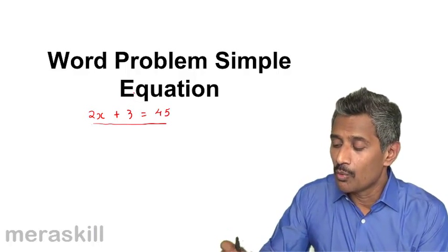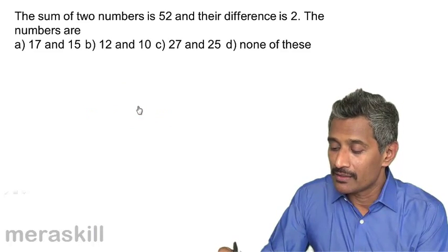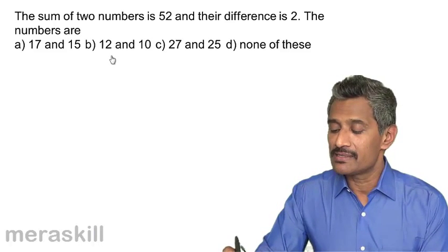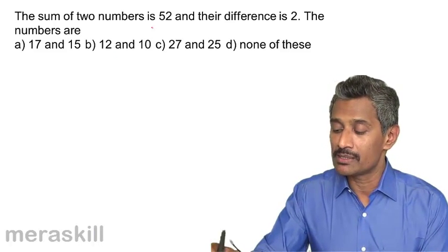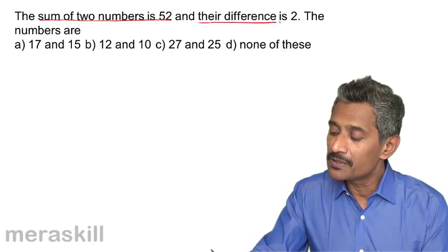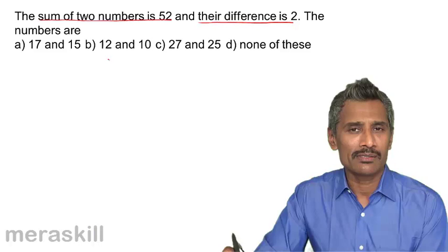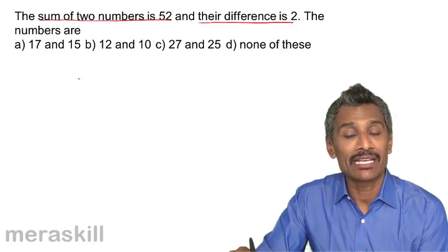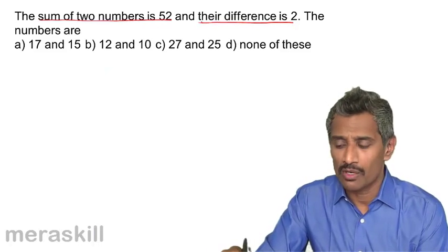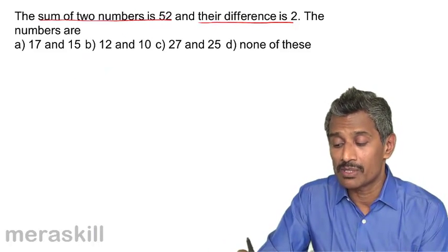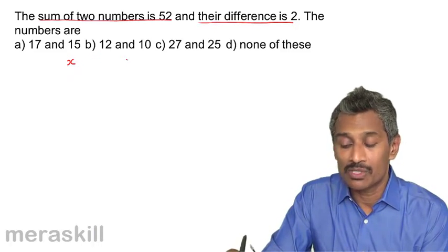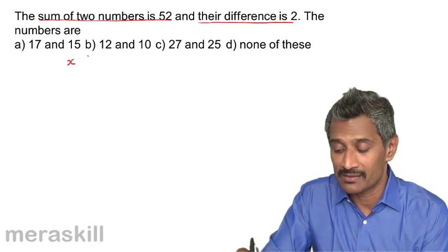The first problem: the sum of two numbers is 52 and their difference is 2. That means there are two numbers which on adding give 52 and whose difference is 2. If one number is x, then x plus the other number is 52, so the other number is 52 minus x.